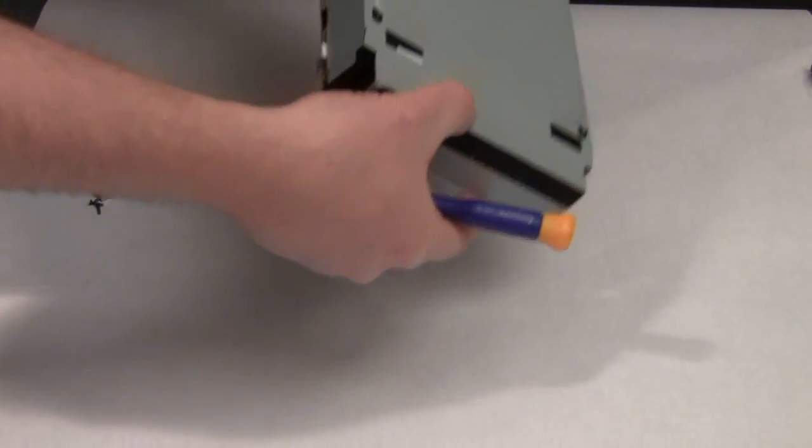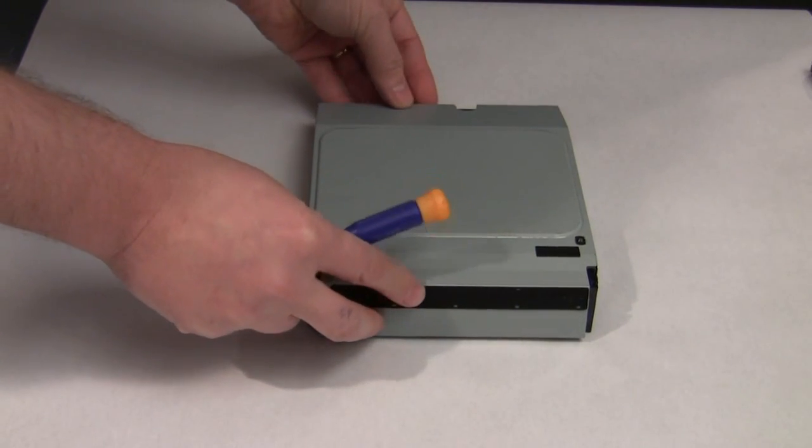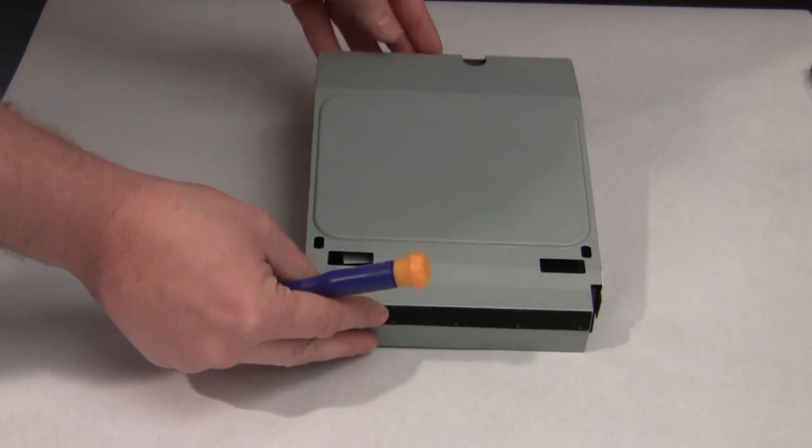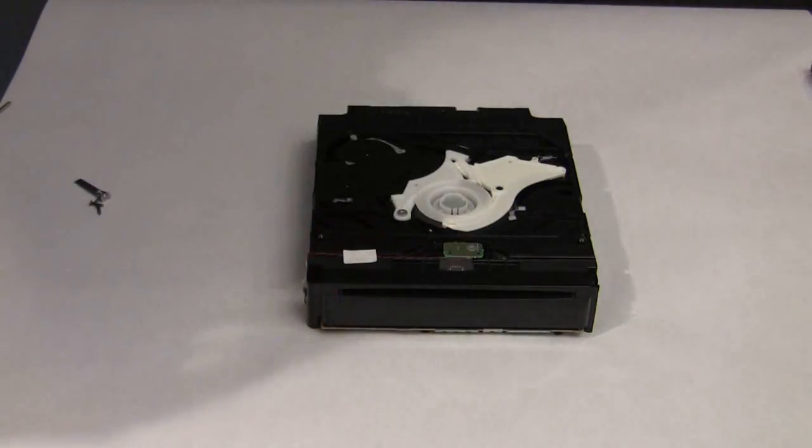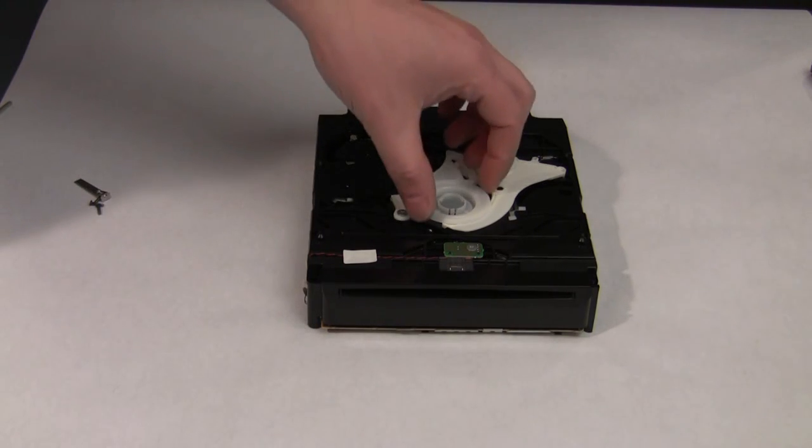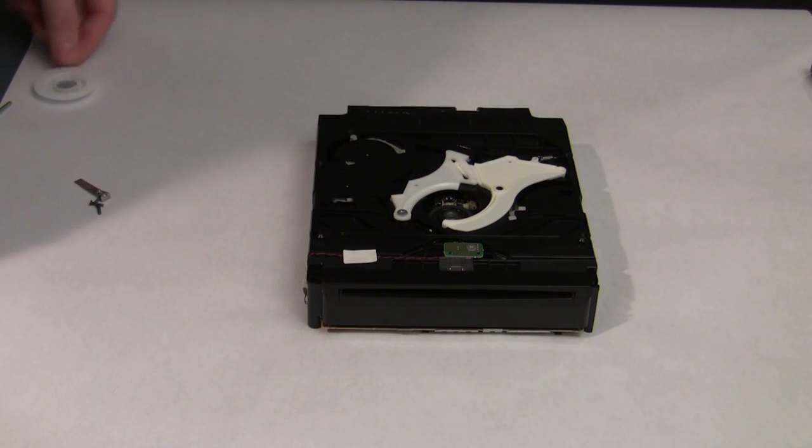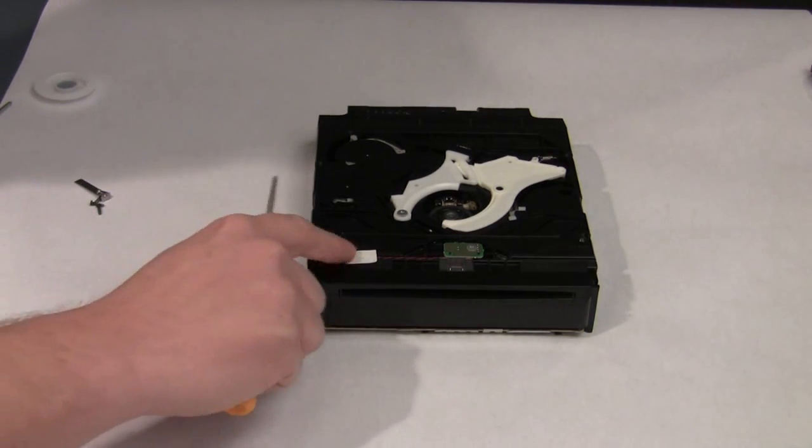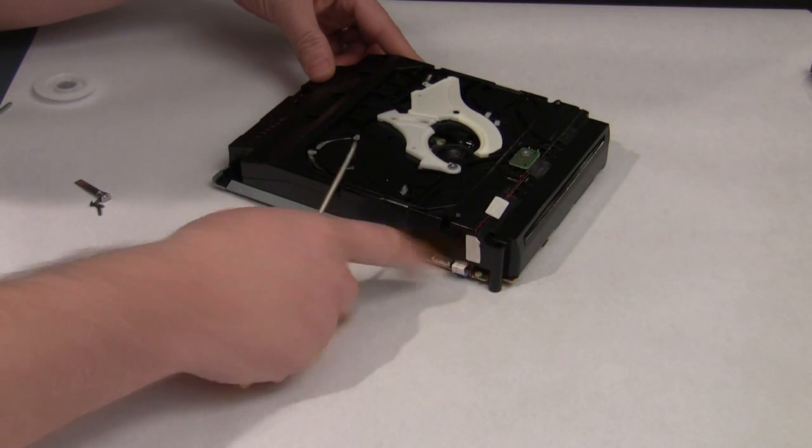Now we just flip our drive back over. And what you're going to do is you're going to just pick up the back and then it just slides forward and then the top comes off. Okay. You're going to take this little plastic piece out here and set it off to the side.